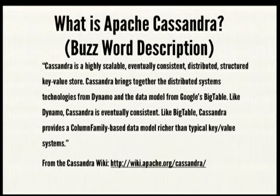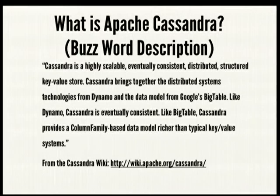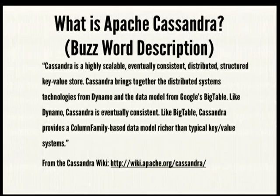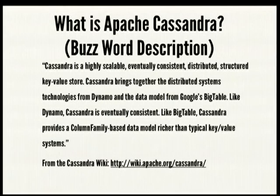So what is Apache Cassandra? From the Cassandra wiki and their website: Cassandra is a highly scalable, eventually consistent distributed structured key-value store. It brings together the distributed systems technology from Dynamo and the data model from Google Bigtable. It's eventually consistent like Dynamo, and has a column family-based column with columns, a key-value store like Bigtable.